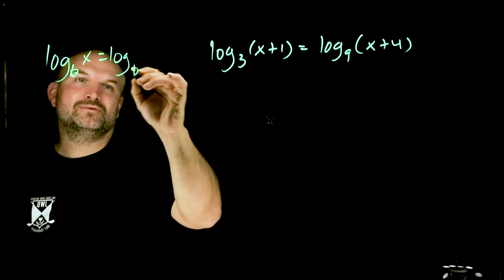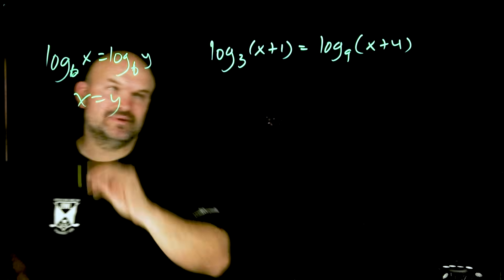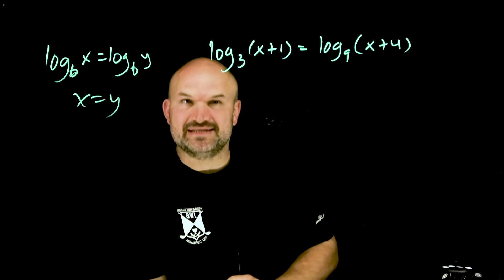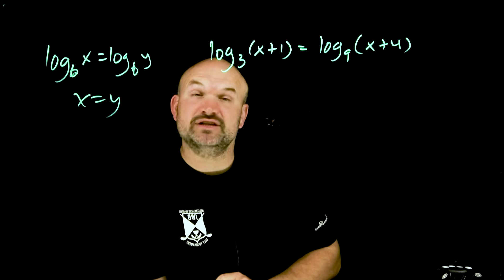When you're applying the log one-to-one property, you have to have the bases to be exactly the same. So we can't go ahead and do that. What we do want to do is get these bases to be the same. Right now they're not the same, so one thing I can apply is what we call the change of base formula.